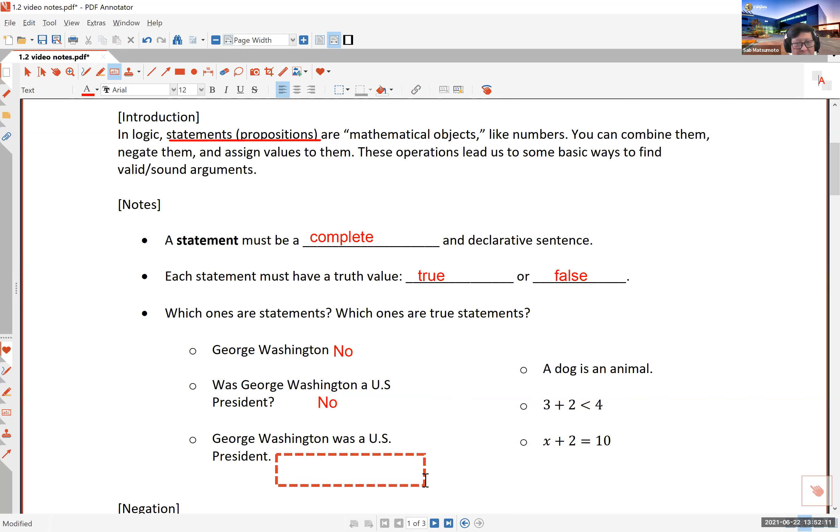The third sentence says, George Washington was a U.S. President. Certainly, it is a statement. It is a complete and declarative sentence. Notice here the word was is a verb. George Washington is a noun. Now, I don't want to be too grammatical here, but grammar tells us that you have to have a noun. You have to have a subject and a verb in order to have a complete sentence. So this one is a statement. Mathematically speaking, it is a proposition and it happens to be a true proposition because he actually was a U.S. President. In fact, the first sentence, a dog is an animal is complete and declarative. And therefore, it is a statement. And furthermore, a dog is an animal. So this is a true statement.